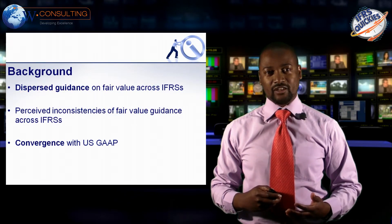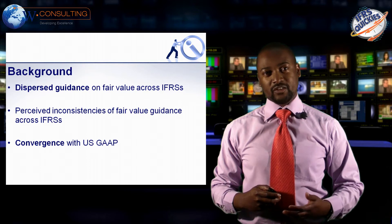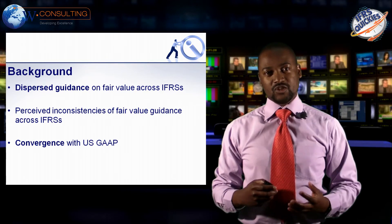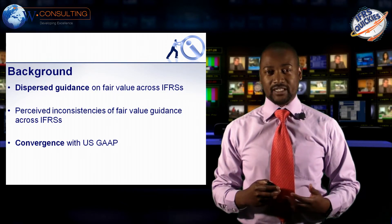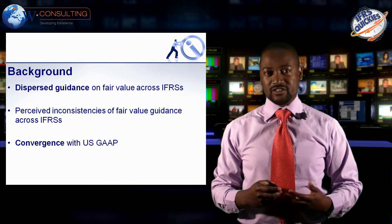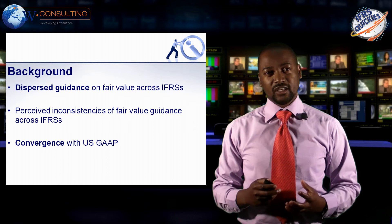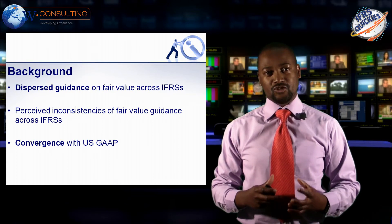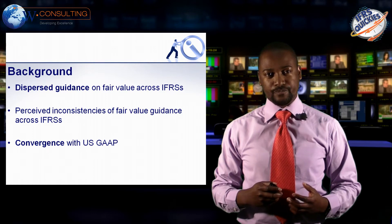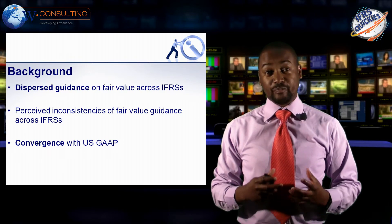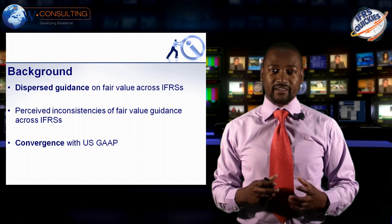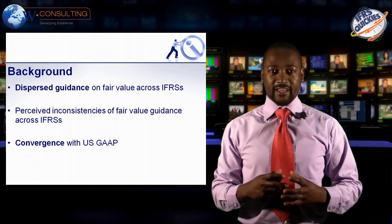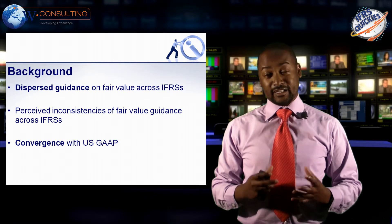A little bit of background around IFRS 13. The IASB decided to issue the standard for a number of reasons. The feeling was the guidance relating to fair value measurement was dispersed across a number of different standards — you had fair value measurement guidance in standards like IAS 40, IAS 16, and so forth. It was felt that creating a coherent and cohesive fair value standard would provide more value for accountants. Because the guidance was sitting in so many different places, there was also the potential for inconsistencies and potential conflict between the guidance provided. So by creating a single standard, you create a single internally consistent guidance on fair value measurement.